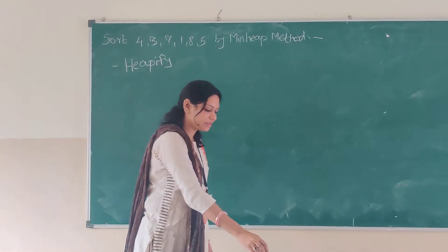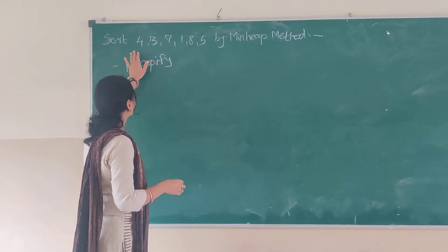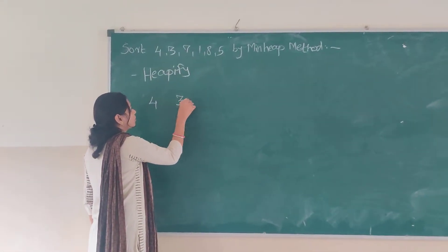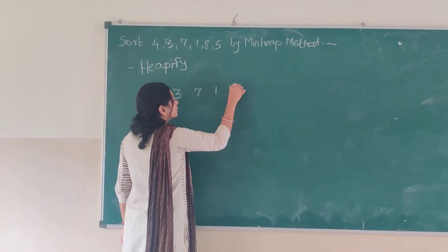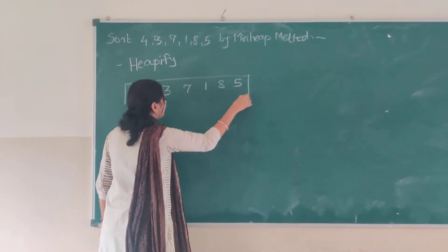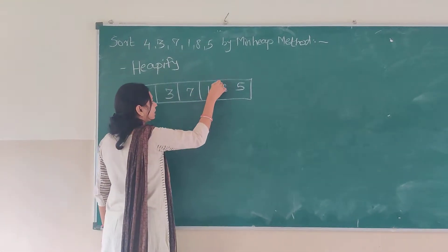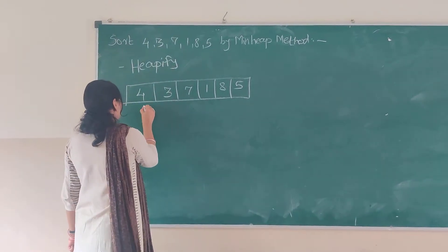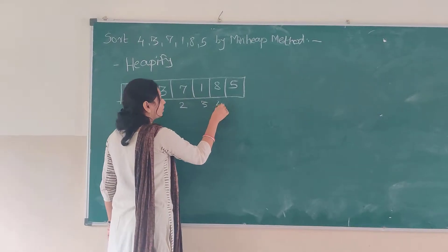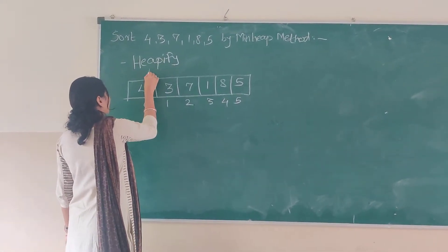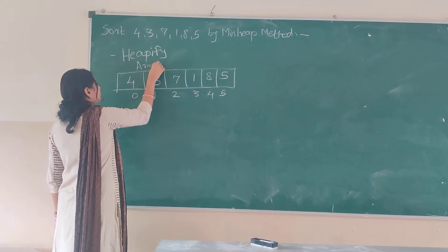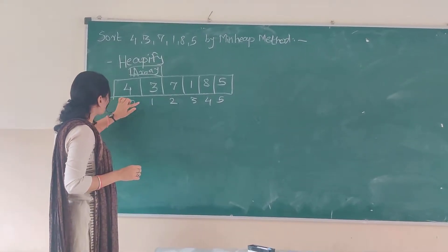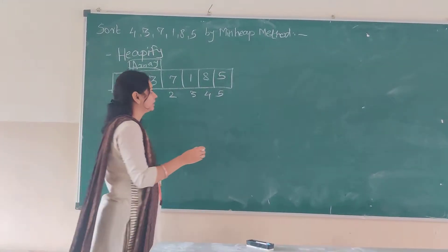At the initial level, we will assign locations to the numbers that are present. We will create a normal tree according to these nodes. The locations are 0, 1, 2, 3, 4, and 5. This is our array which contains all the elements, and according to location we will be creating the tree.